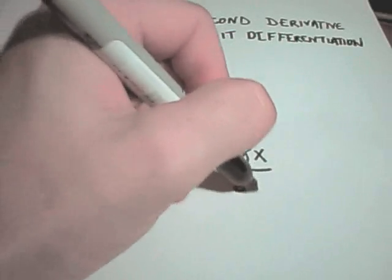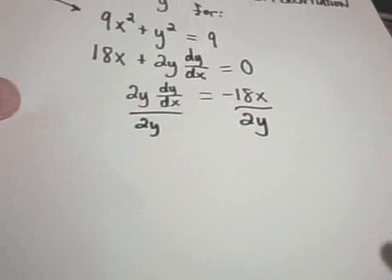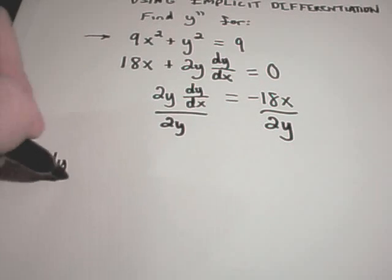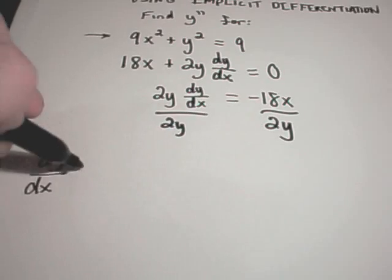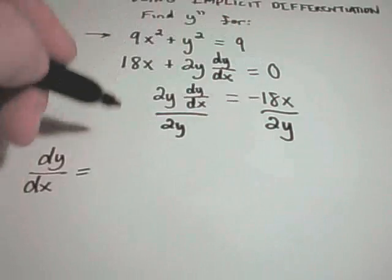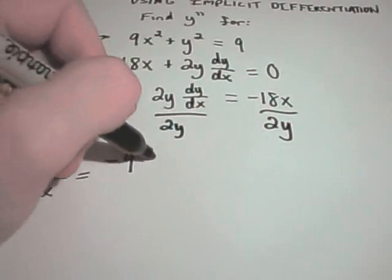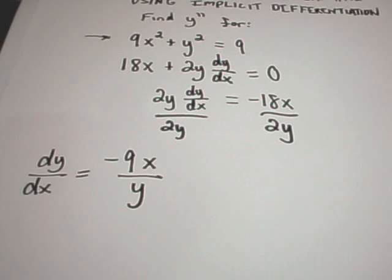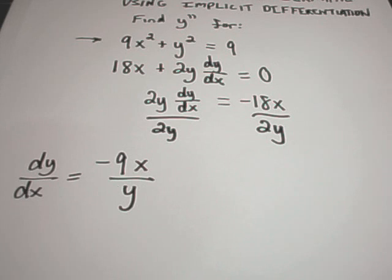And then I'm simply going to divide through by the 2y. So divide by 2y, divide by 2y. And now on the left side, you're going to be left with dy dx equaling, well, negative 18 over 2 is negative 9, x over y. And that's going to be your first derivative using implicit differentiation.